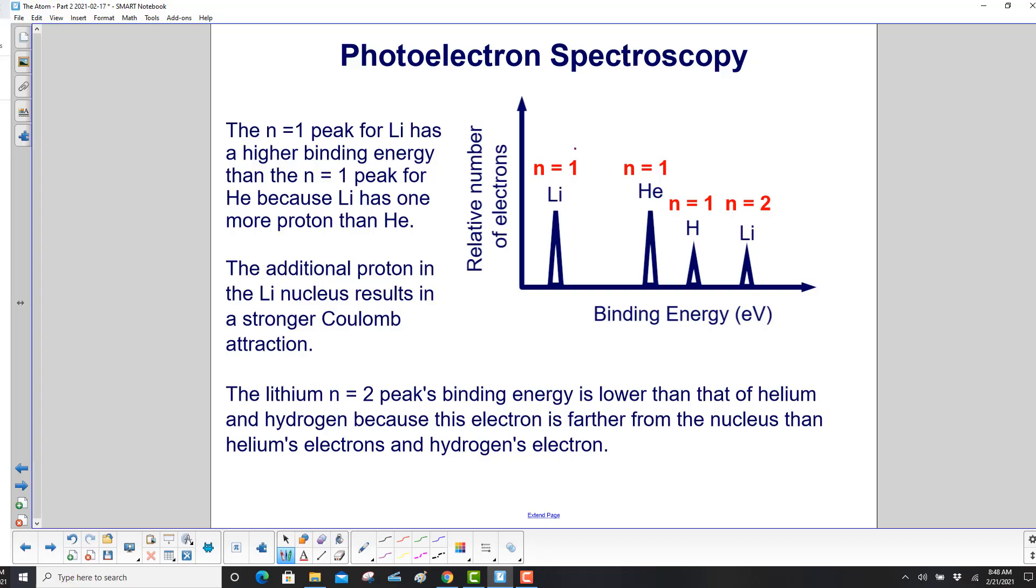The n equal 1 peak for lithium has a higher binding energy than the n equal 1 peak for helium, because lithium has one more proton than helium. The additional proton in the lithium nucleus results in a stronger Coulomb attraction.